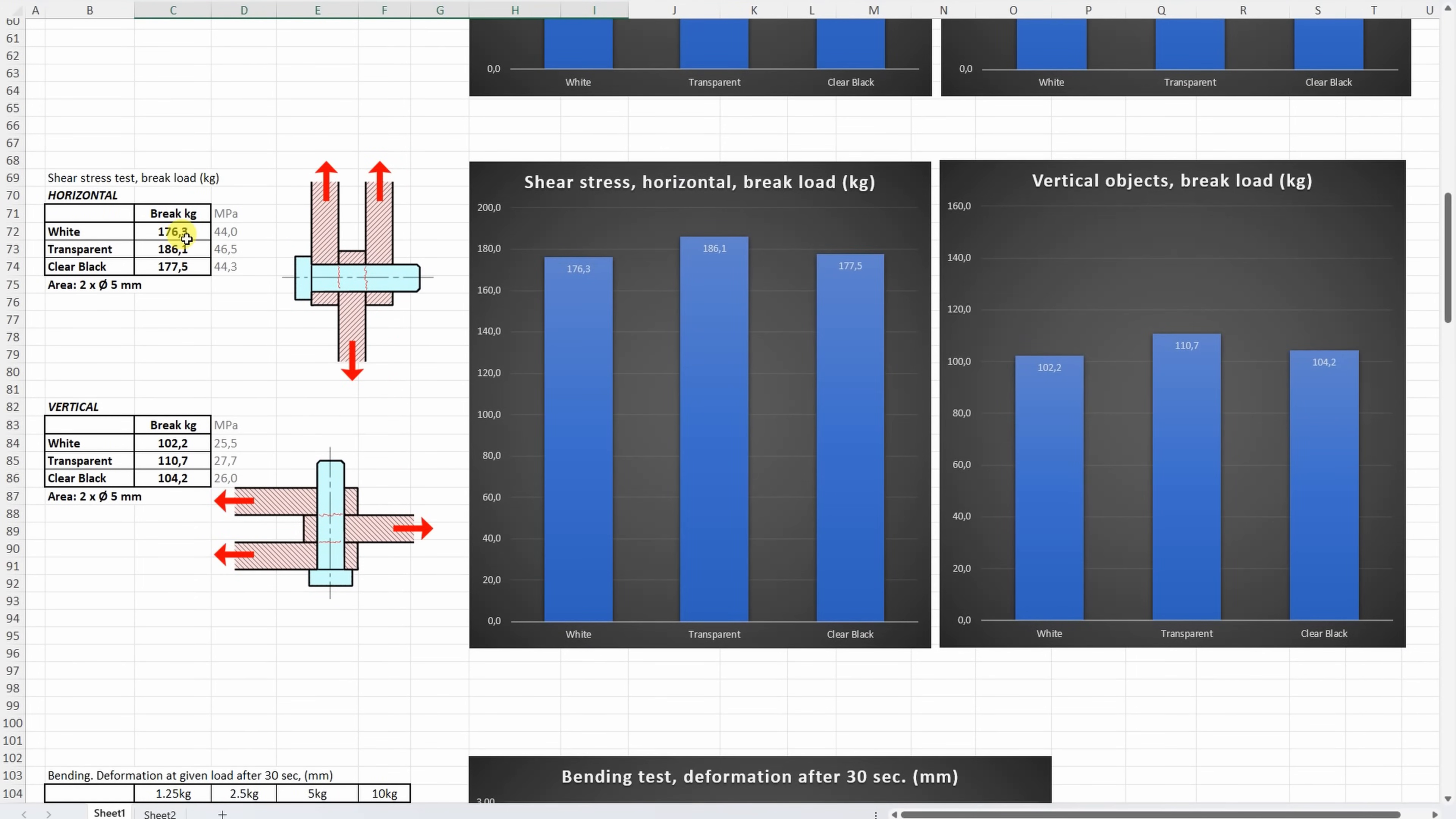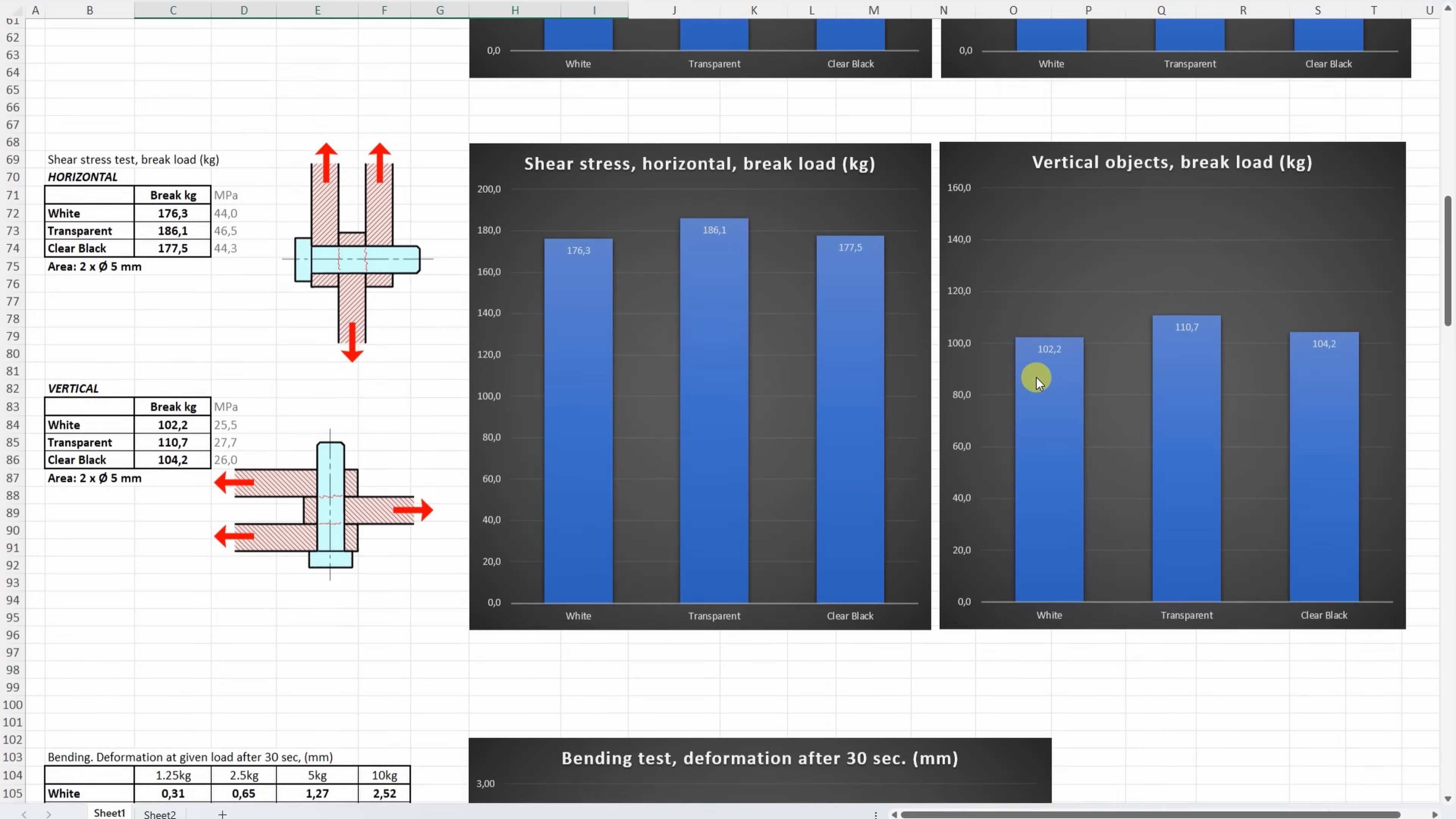On share stress, again very strong in this test. It was really hard to break these test objects. And again we can see some minimal differences between the colors. On the vertically printed objects where the layer adhesion is important, here the transparent was slightly stronger compared to the other two.